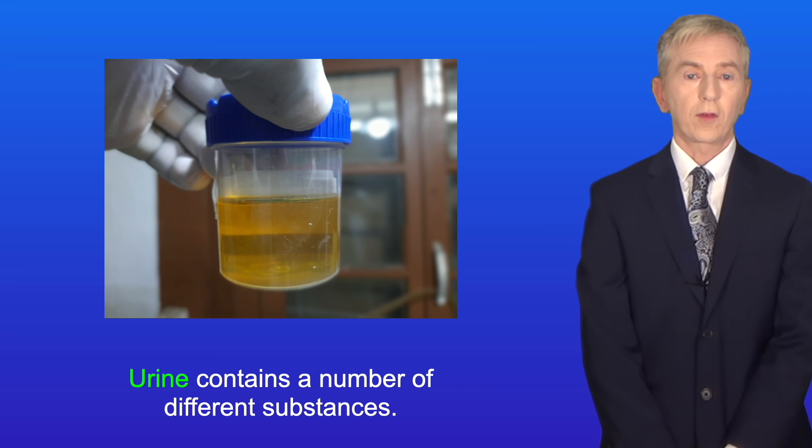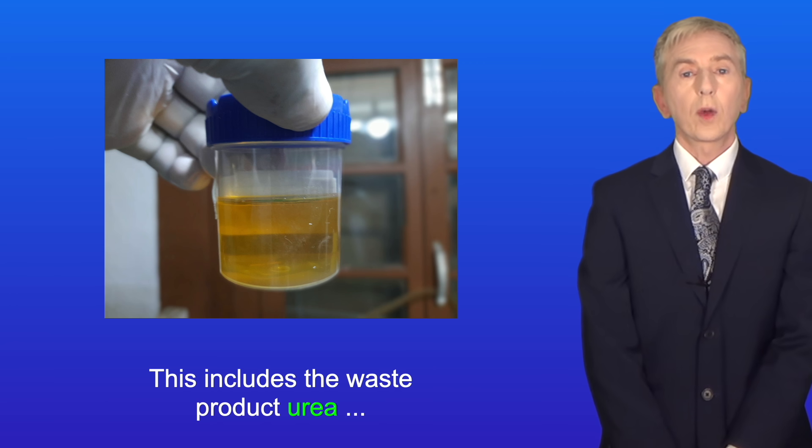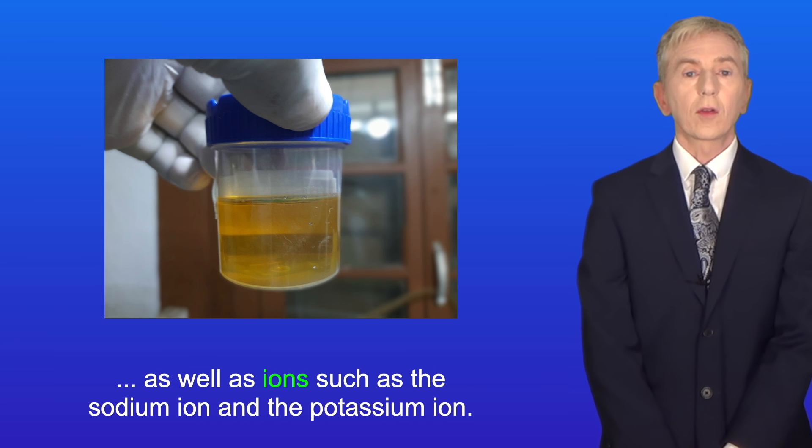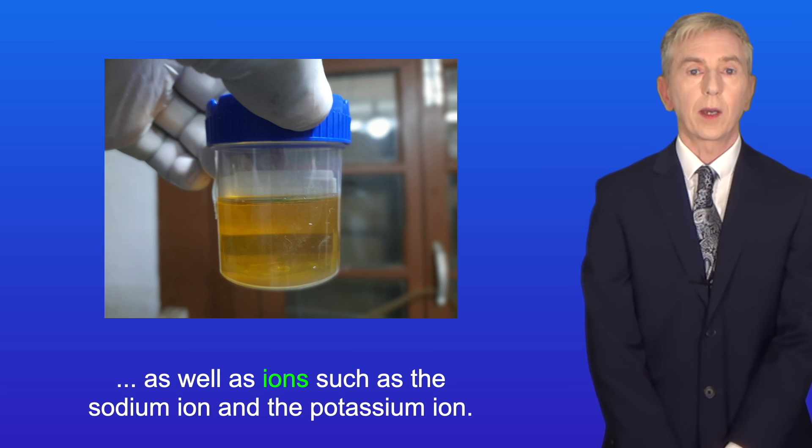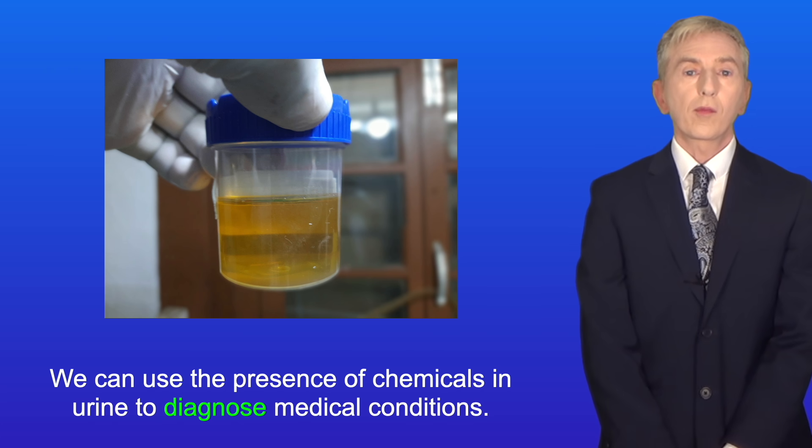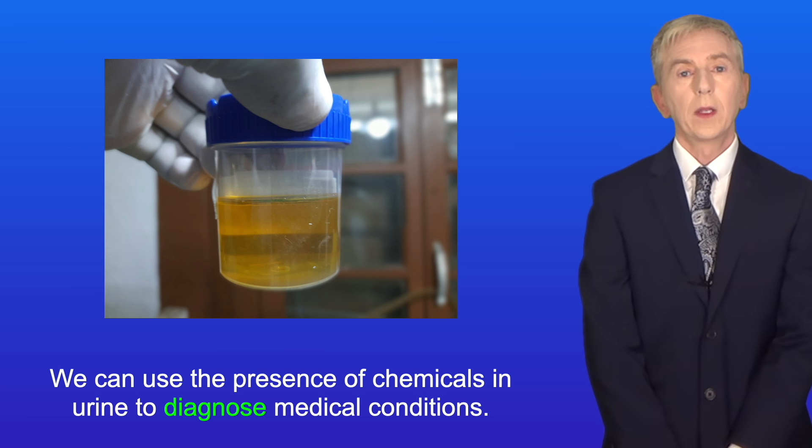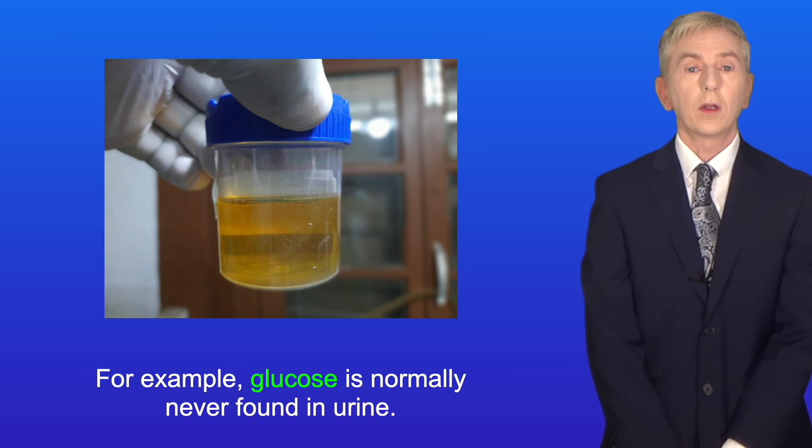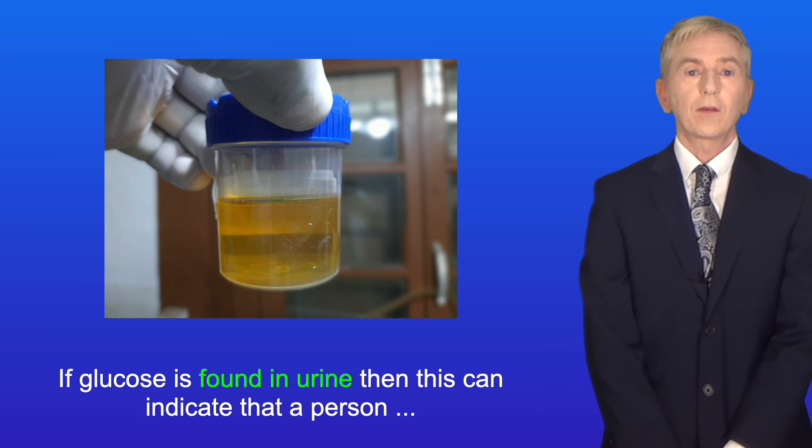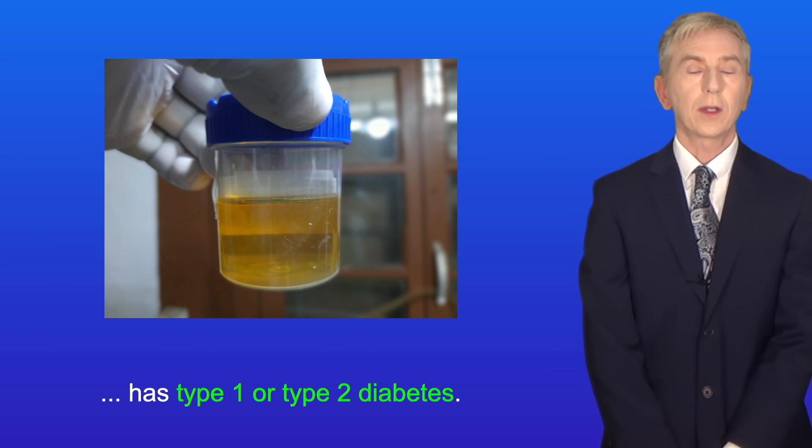Urine contains a number of different substances. This includes the waste product urea as well as ions such as the sodium ion and the potassium ion. We can use the presence of chemicals in urine to diagnose medical conditions. For example, glucose is normally never found in urine. So if glucose is found in urine, then this can indicate that a person has type 1 or type 2 diabetes.